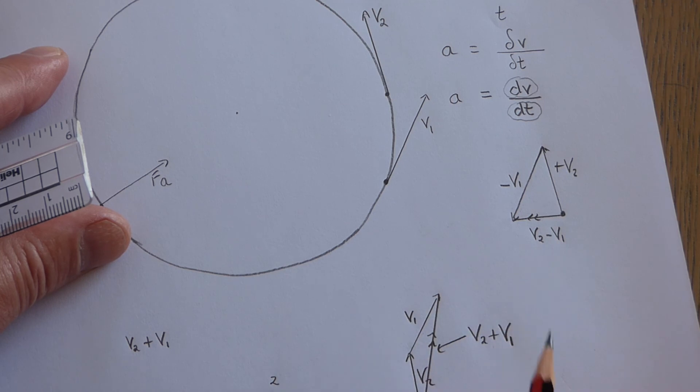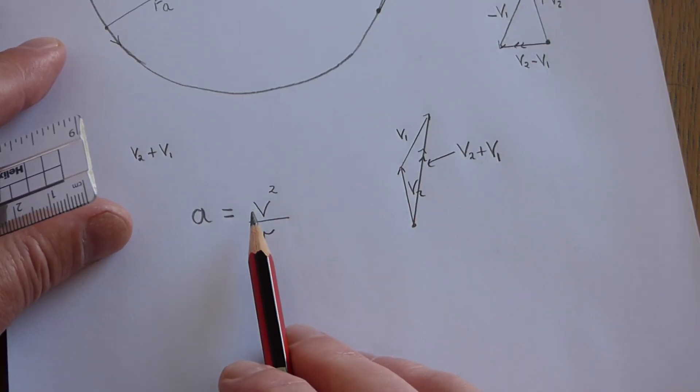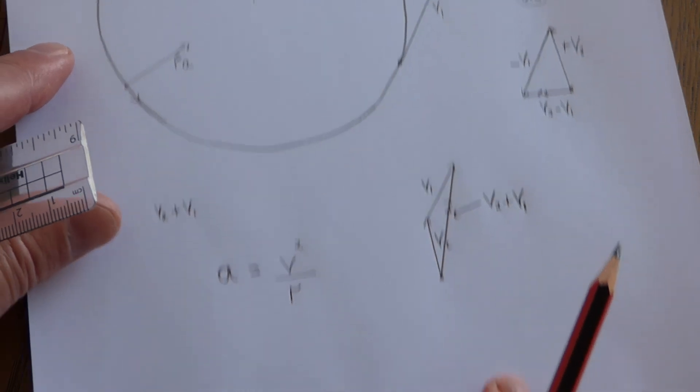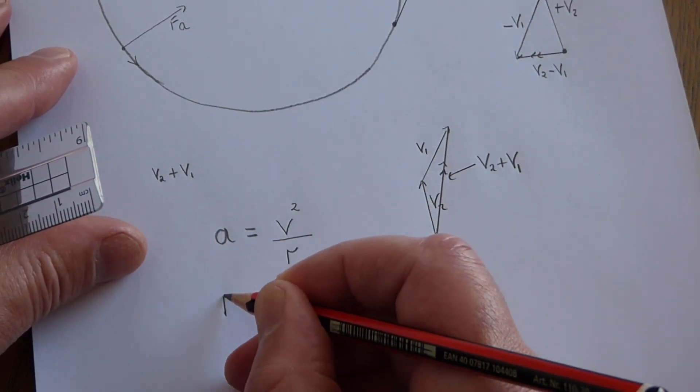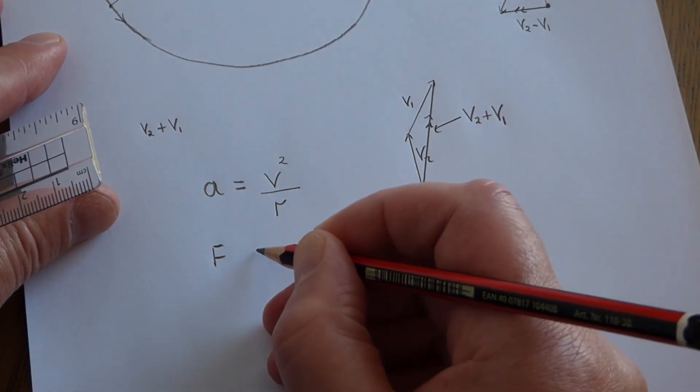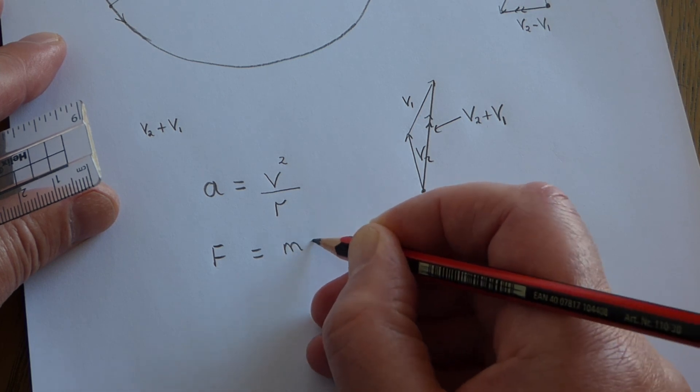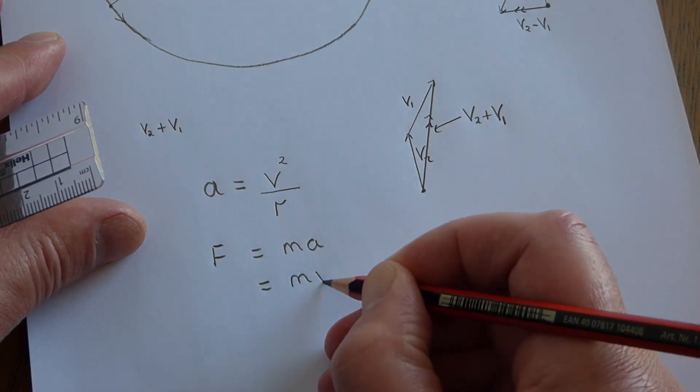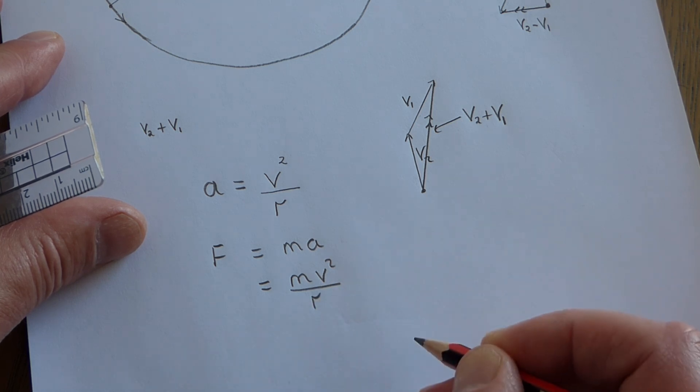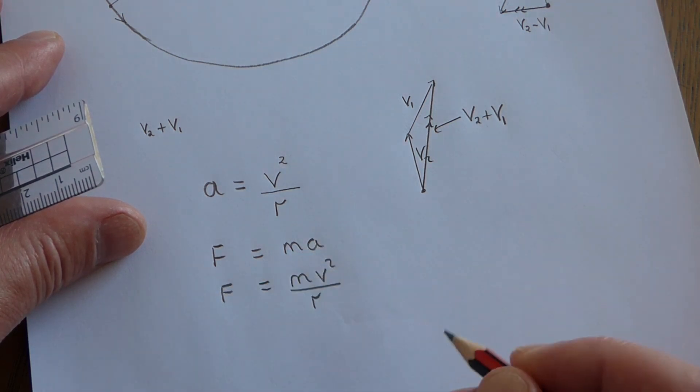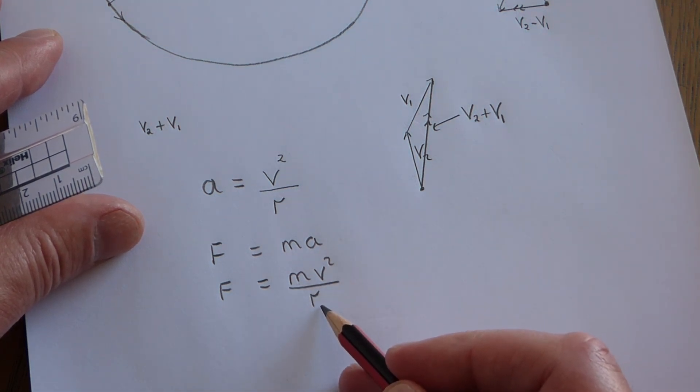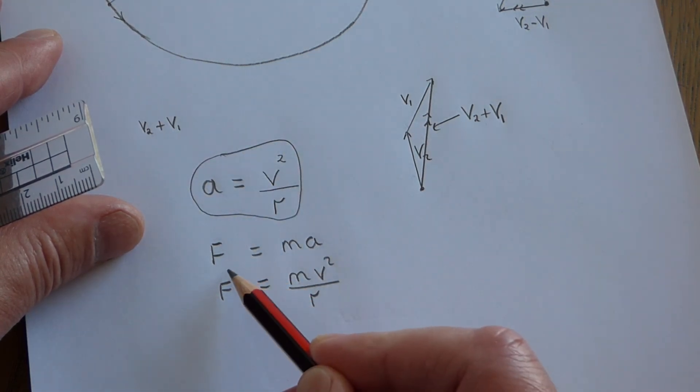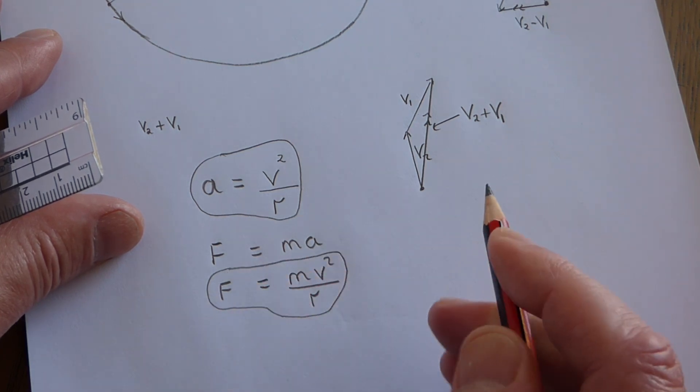Once you've got your acceleration formula, the force needed to make that acceleration happen is straightforward to write down. The resultant force applied to an object is mass multiplied by acceleration. We've written v²/r as the acceleration, so the force causing circular motion is F = mv²/r. This formula for acceleration has to be learned, and so does the formula for centripetal force.